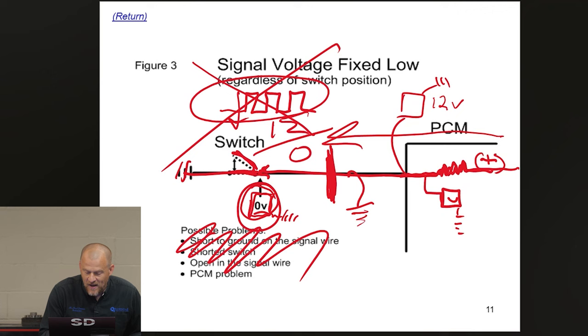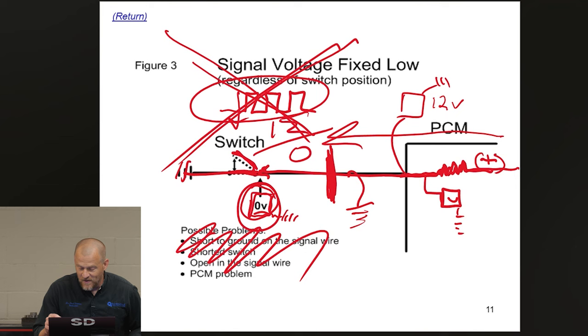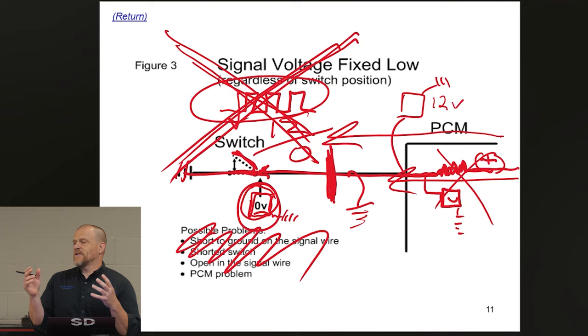We also know that if this wire was shorted to ground, you can't have a good signal here. It would be fixed at zero all the time. We also know if the computer was a problem in not sourcing this voltage out, we can't have a good signal here. It's not physically possible.